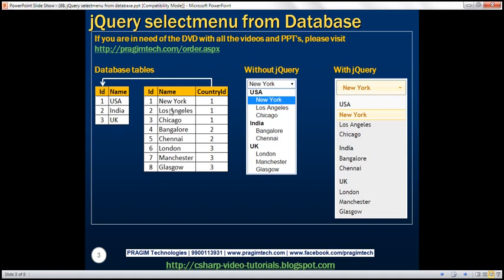Using the data from these two tables, we want to build a drop-down list. Notice we've got country USA, and underneath that we have all the cities belonging to USA. Then we have country India with its cities, and similarly UK with the cities belonging to that. Now, here we are not using any sort of jQuery. With jQuery, jQuery UI styles will be applied to the drop-down list, and this is how it looks like.